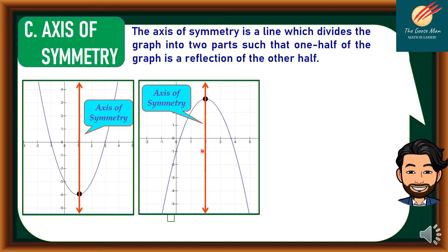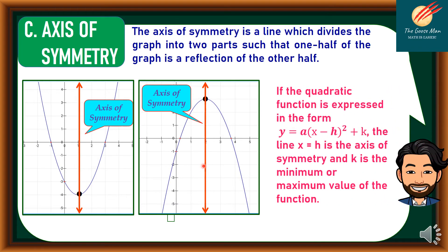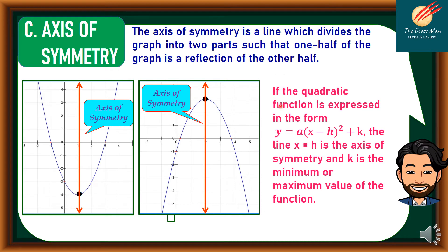Also, this is our axis of symmetry. Take note that if the quadratic function is expressed in the form y = a(x − h)² + k, the line x = h is the axis of symmetry, and k is the minimum or the maximum value of the function.